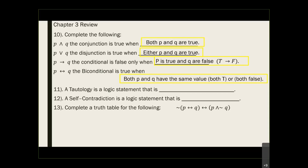A tautology is when all your statement values are always true. A self-contradiction is when the statement is always false — all of your values are false. I'll speed through this since it's a review, and I will post these slides online.